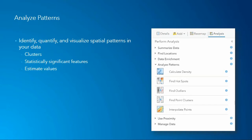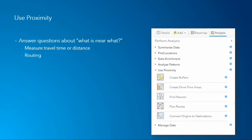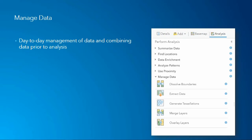Next up is Analyze Patterns — identifying, quantifying, and visualizing spatial patterns in your data. Think of cluster analysis, finding statistically significant features, or estimating values for data we don't have in a certain area based on existing values. Use Proximity is all about answering questions like what is near what. In addition to basic buffering, this incorporates network analysis, taking into account a transportation network to measure travel time or distance, and intelligently routing from one point to another or many points.